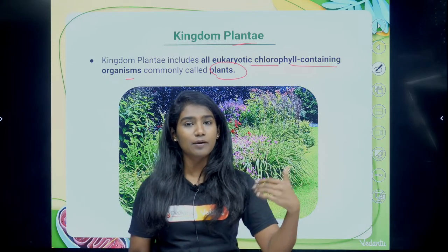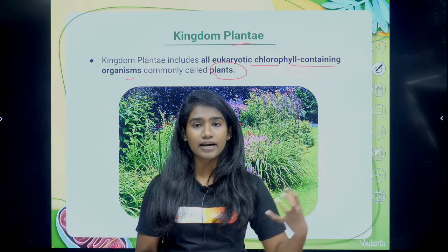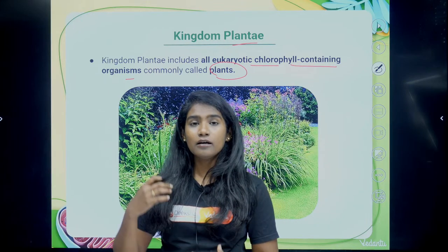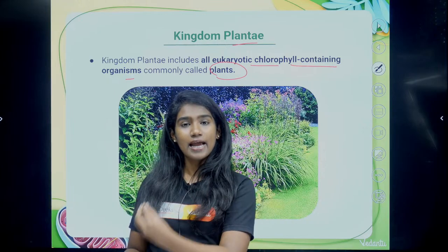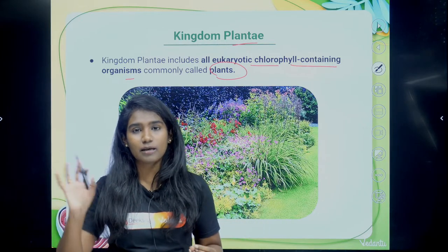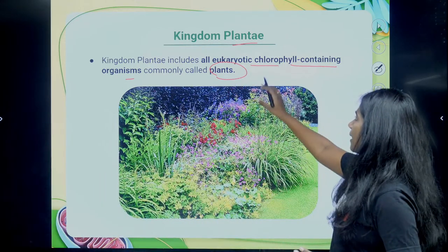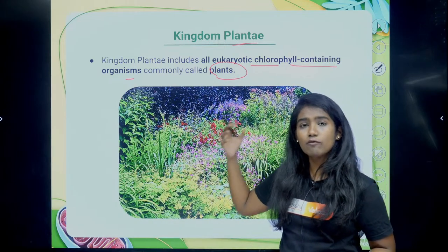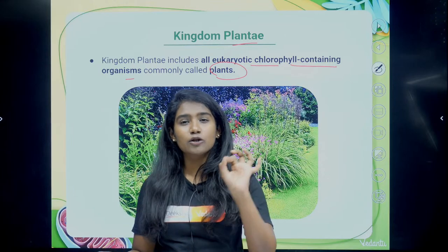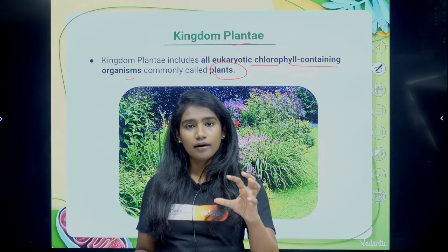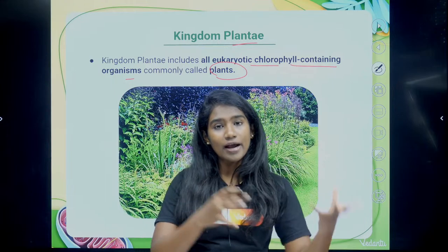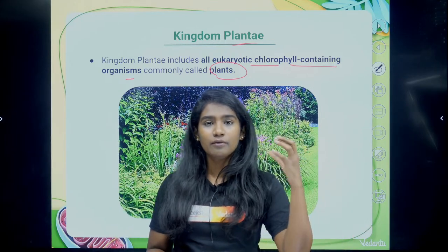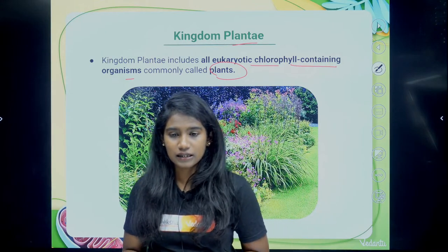Photoautotrophs prepare their own food using sunlight as the energy source. Chemoautotrophs also prepare their own food but derive energy from chemical reactions. In kingdom Plantae, all organisms are eukaryotic and chlorophyll-containing. A common question is: fungi also have cell walls and are eukaryotic and multicellular — so why is fungi not placed in kingdom Plantae?